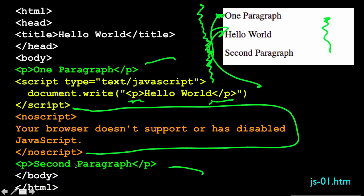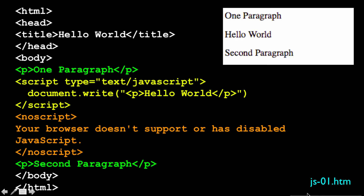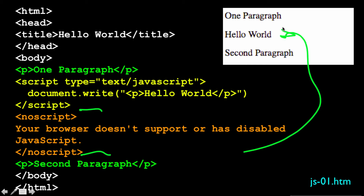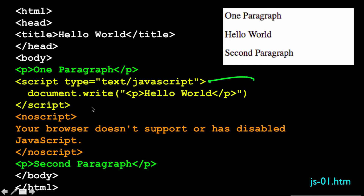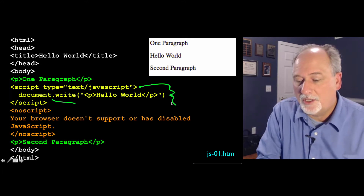The noscript tag handles the situation where the browser doesn't support JavaScript. These days it's less and less common for browsers not to support JavaScript. When JavaScript first came out there was a debate about whether to support it, but most full-featured websites demand JavaScript at this point. The noscript tag is a way to print something out in case JavaScript is not enabled. But basically we start with the script tag and end with slash-script, and we put some code in the JavaScript language.